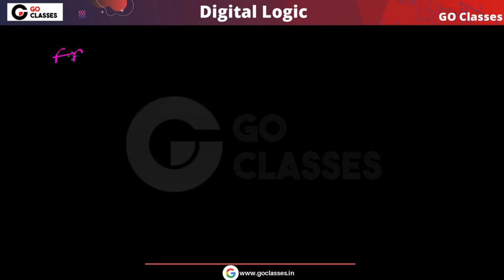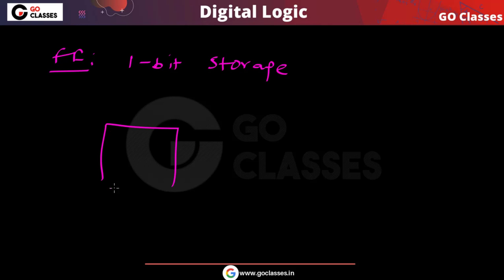A flip-flop is basically a one-bit storage device. This flip-flop can be a D flip-flop, JK flip-flop, SR flip-flop, T flip-flop, or any other type of flip-flop. The key point is that a flip-flop is a one-bit storage device — you can store either 0 or 1 in it.